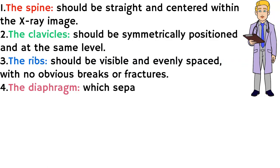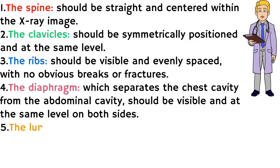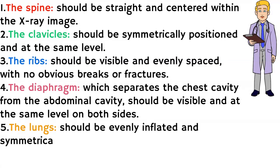4. The diaphragm, which separates the chest cavity from the abdominal cavity, should be visible and at the same level on both sides. 5. The lungs should be evenly inflated and symmetrically positioned within the chest cavity.